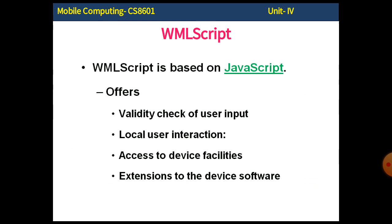WML Script offers validity checking of user input — for example, a name should be in a proper format, and age should be within an acceptable range such as 25 to 65, depending on business policy. It also provides local user interaction, basic communication, access to device facilities, and extension to device software. Using WML Script, you can write script programs to interact with and access these facilities from the mobile device.